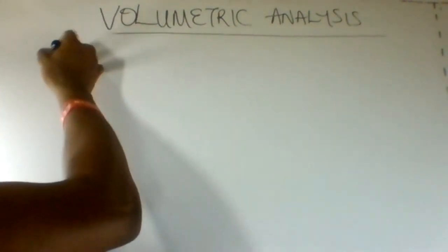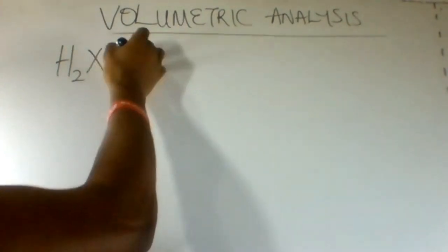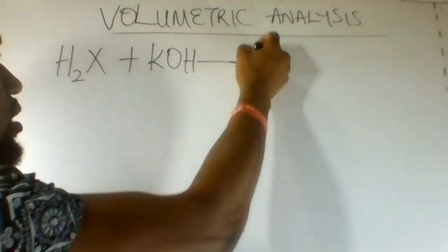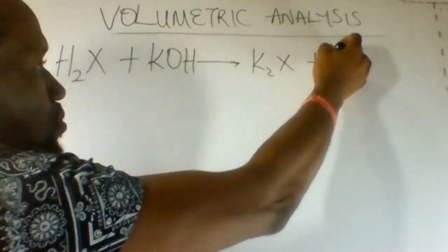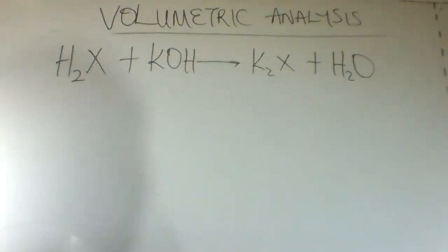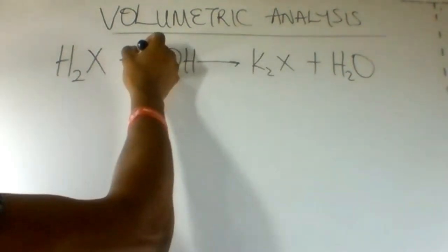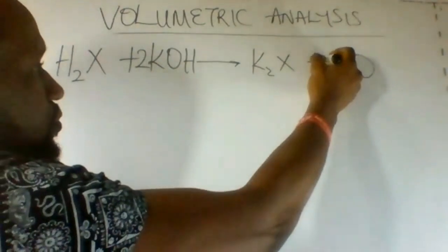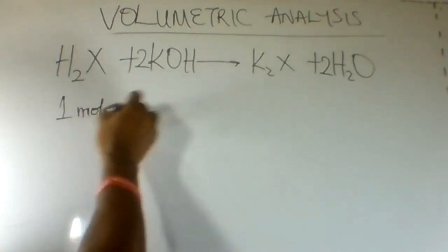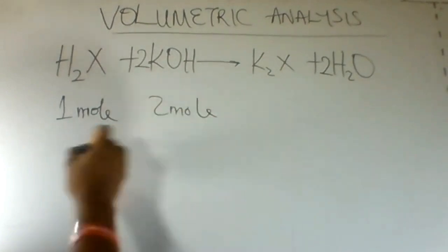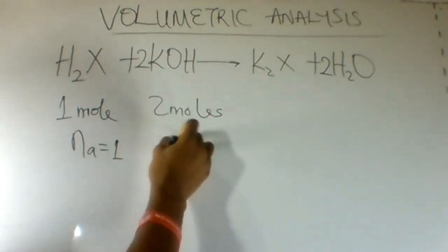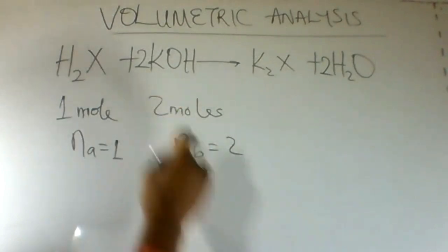To solve the first part of the question, write the equation for the reaction. H2x plus KOH gives K2x plus H2O. Balancing that out, we have H2x plus 2KOH giving K2x plus 2H2O. So one mole of the acid reacts with two moles of the base. Na is 1 and Nb is 2.